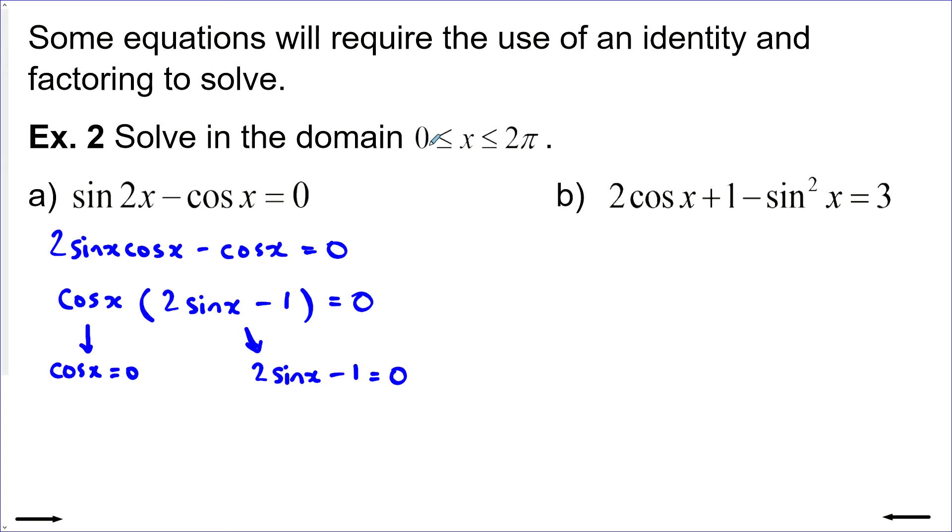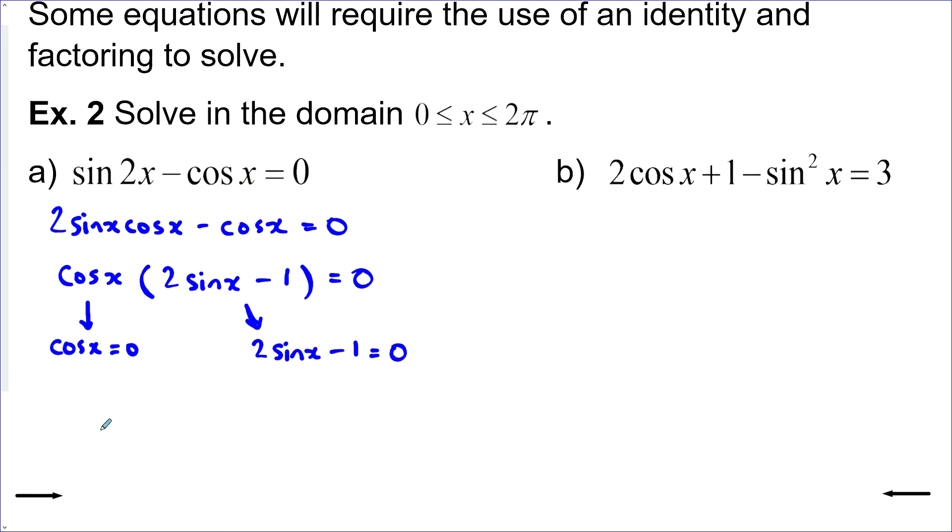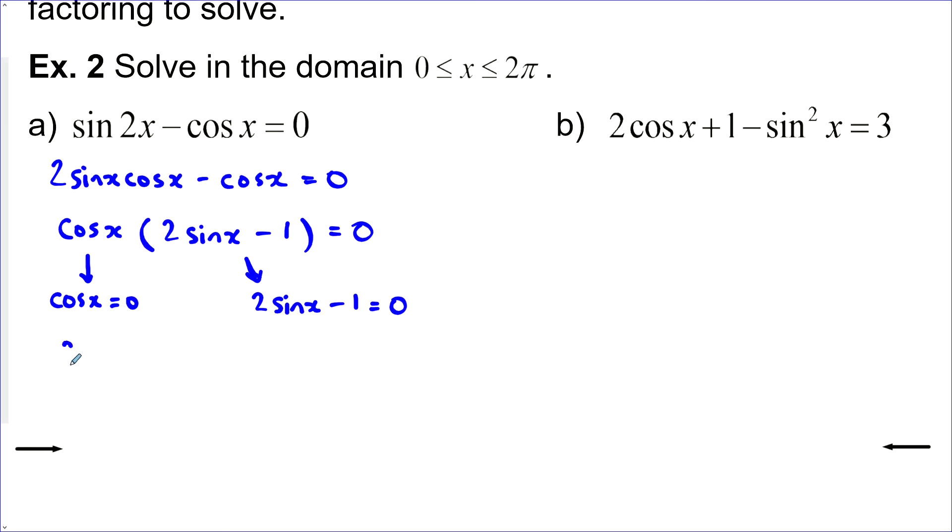Now I do have a domain restriction here in between zero and 2 pi, including zero and 2 pi. So where is cos equal to zero? That's when our x coordinate is equal to zero. So that would be pi over 2 and 3 pi over 2.